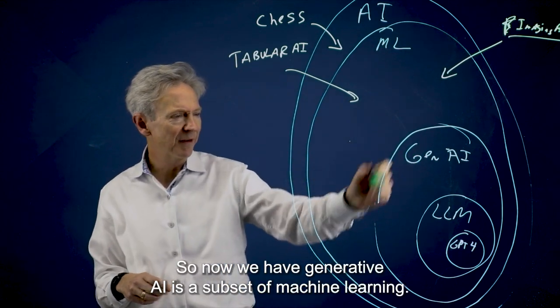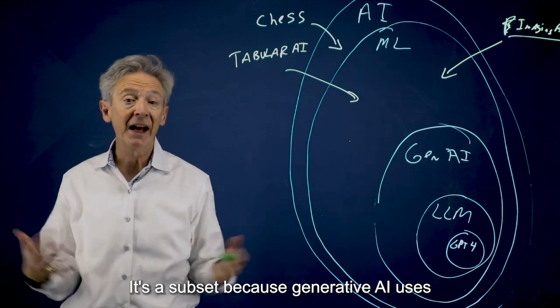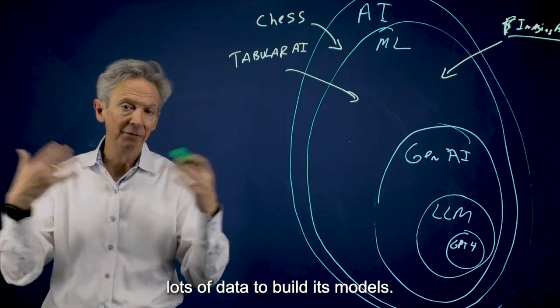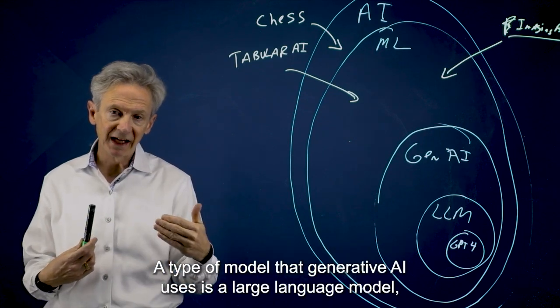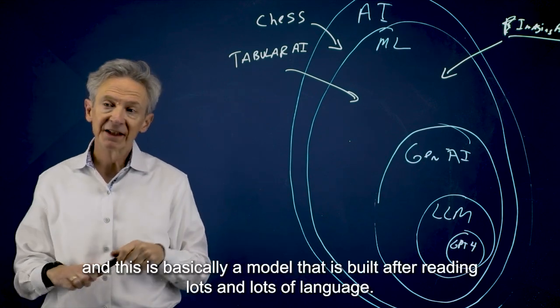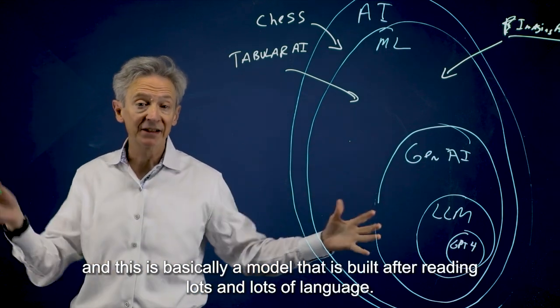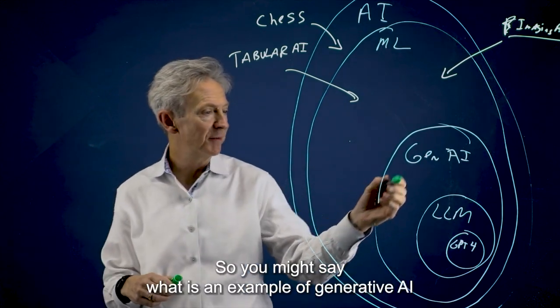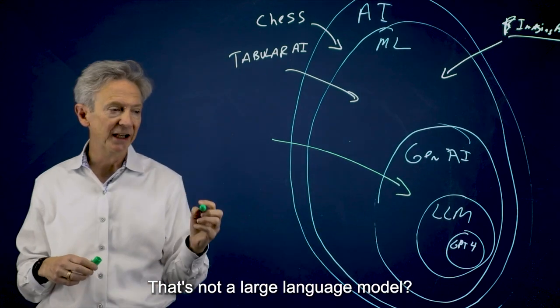Okay, so now we have generative AI is a subset of machine learning. It's a subset because generative AI uses lots of data to build its models. A type of model that generative AI uses is a large language model. And this is basically a model that is built after reading lots and lots of language. So you might say, what is an example of generative AI that's not a large language model?